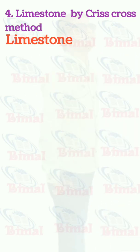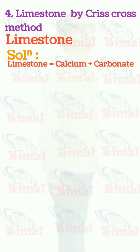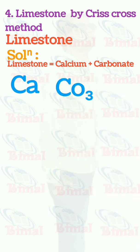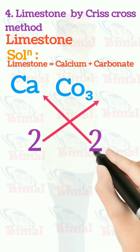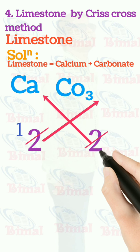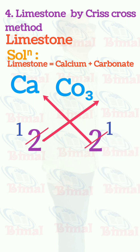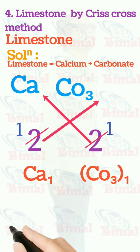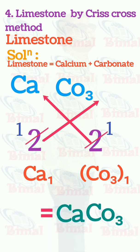Molecular formula of limestone by criss-cross method. Limestone is equal to calcium plus carbonate. Symbol for calcium is Ca, symbol for carbonate is CO3. Valency of calcium is 2 and valency of CO3 is also 2. In criss-cross, both sides are 2, so we divide 2 by 2 to get 1 on each side. This gives us Ca1 and CO3(1), which is equal to CaCO3. We don't write 1, so the molecular formula for limestone is CaCO3.